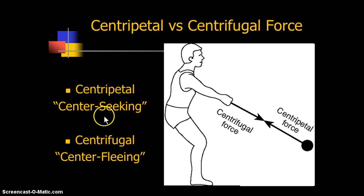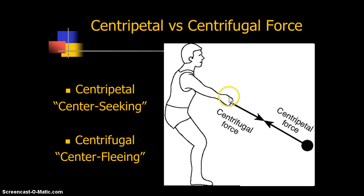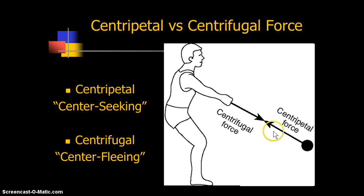Centripetal force, with a P, stands for center seeking. So the centripetal force is the force felt by the ball. The ball is attached to a line which the man is holding. As the man spins around in a circle with this shot put ball, the force that the ball is actually feeling is towards the man. There's a force towards the man caused by the attachment of that rope. The ball wants to go outward, but it doesn't because of the force seeking the center of that rotational movement. That's the centripetal force.